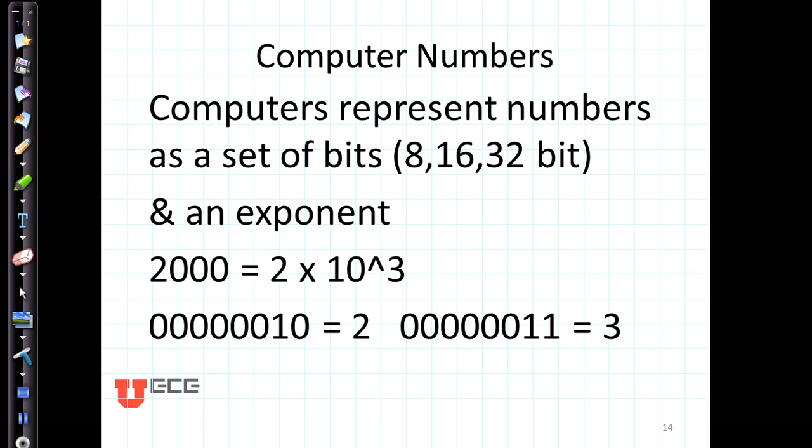Computers represent numbers as sets of bits, eight, sixteen, or thirty-two bit, for example, and an exponent. So if we wanted to count to 2,000, we would say that's 2 x 10^3. We'd represent that as two, there's one light on and one light off, times ten to the third. There's the three.